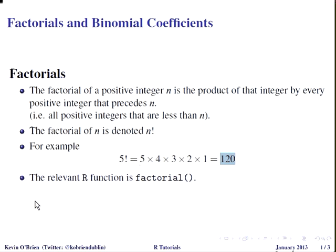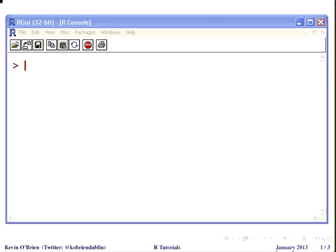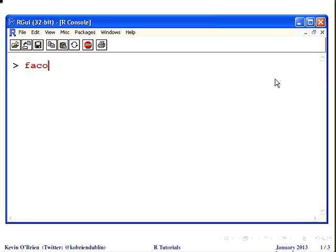Now the relevant R function here is simply factorial. So I'm going to type this into R now. Factorial of 5, 120.